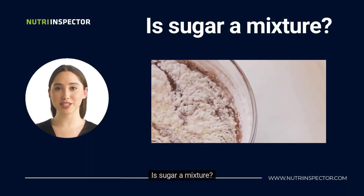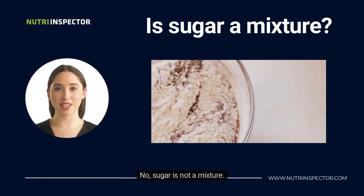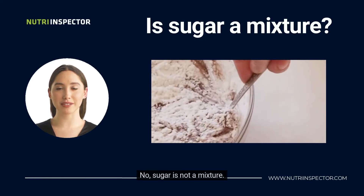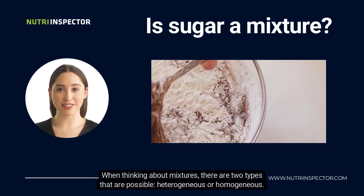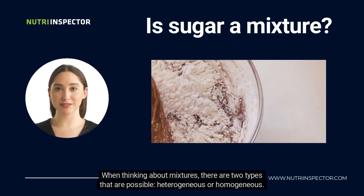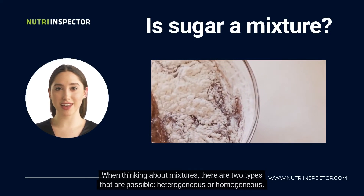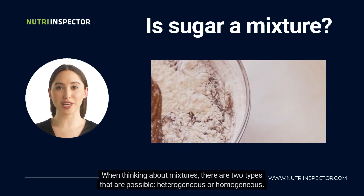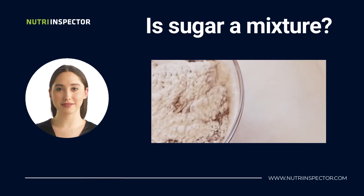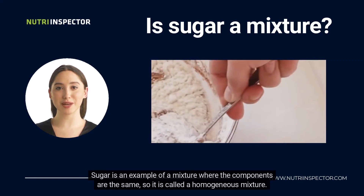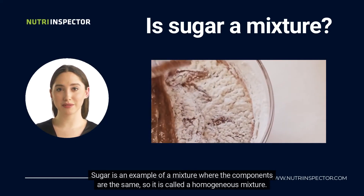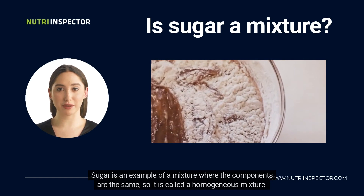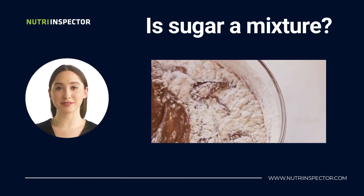Is sugar a mixture? No, sugar is not a mixture. When thinking about mixtures, there are two types that are possible: heterogeneous or homogeneous. Sugar is an example of a mixture where the components are the same, so it is called a homogeneous mixture.